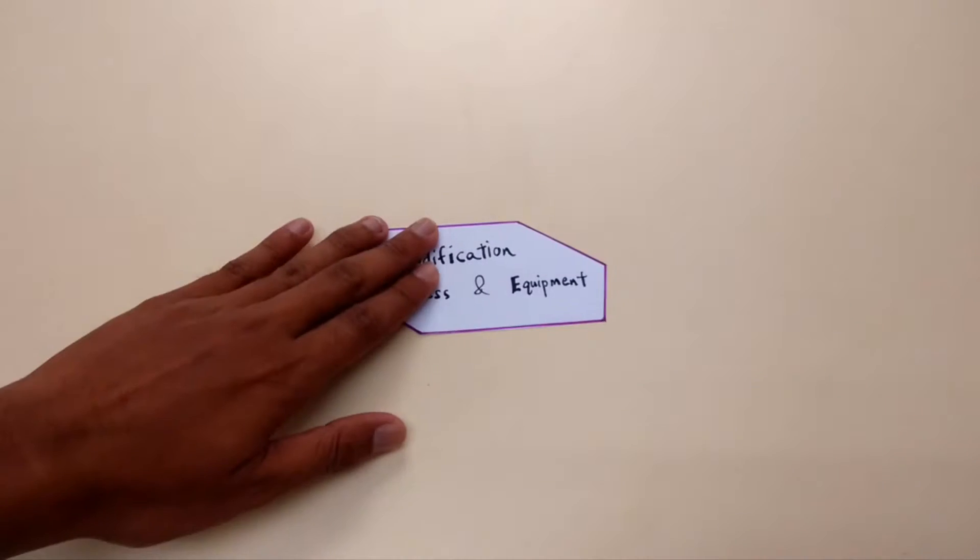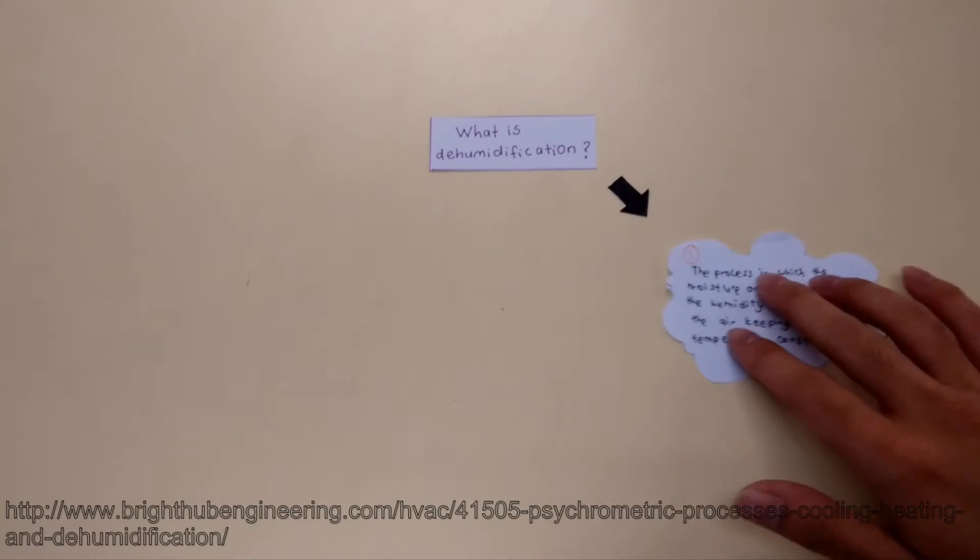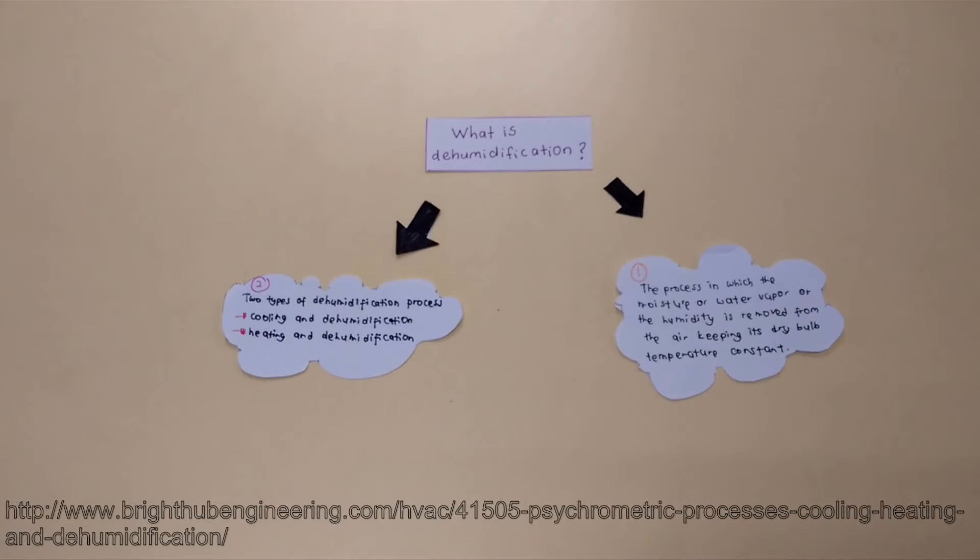Dehumidification process and equipment. What is dehumidification? The process in which the moisture or water vapor or the humidity is removed from the air keeping its dry bulb temperature constant. There are two types of dehumidification process: first is cooling and dehumidification, and second one is heating and dehumidification.